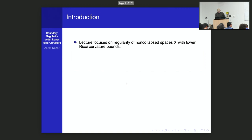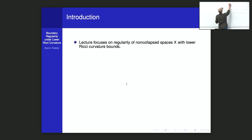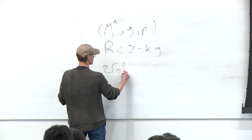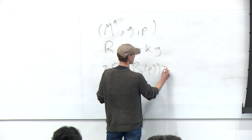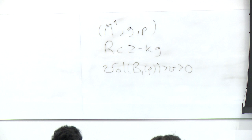My talk is going to be focusing on non-collapsed spaces with lower Ricci bounds. Just a quick overview: a manifold at a point has a Ricci bound of some fixed amount. Non-collapsed means the volume of the ball of radius one is bounded from below by some definitive positive quantity. I'll give some explanation for where that comes from.